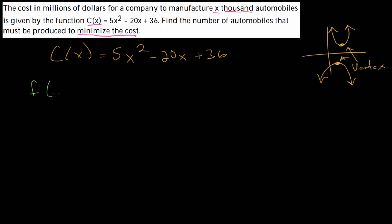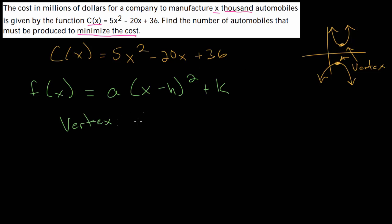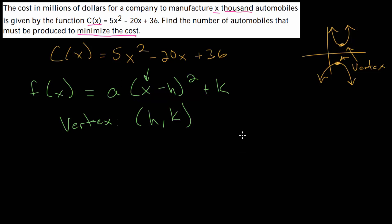With finding the vertex, there are a couple of different strategies. We could find the zeros of the function, set this equal to zero, and then average them because the vertex will be right in the middle of the two zeros. Or we could complete the square and rewrite this in vertex form. If we have a quadratic in vertex form, we can write it as a multiplied by (x minus h) squared plus k, where the vertex is at (h, k).